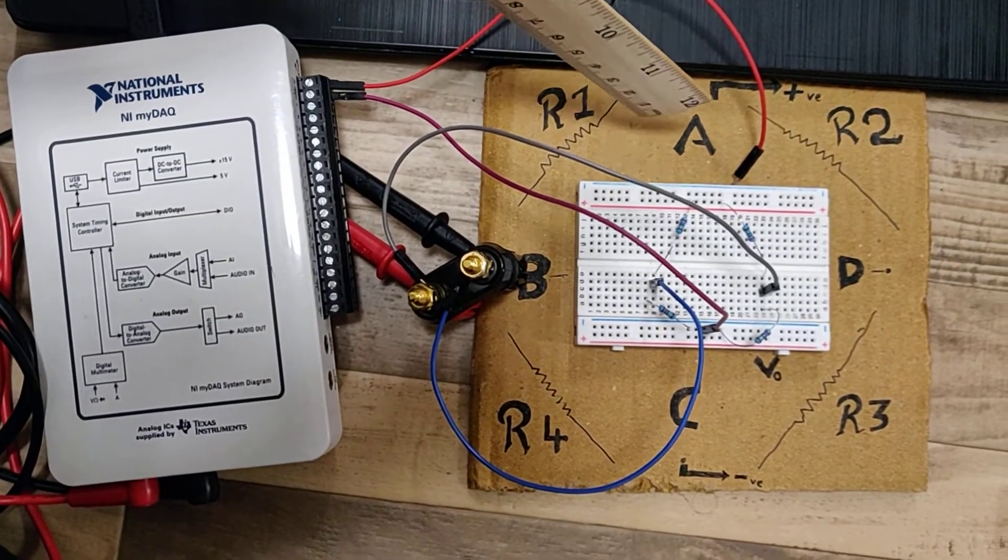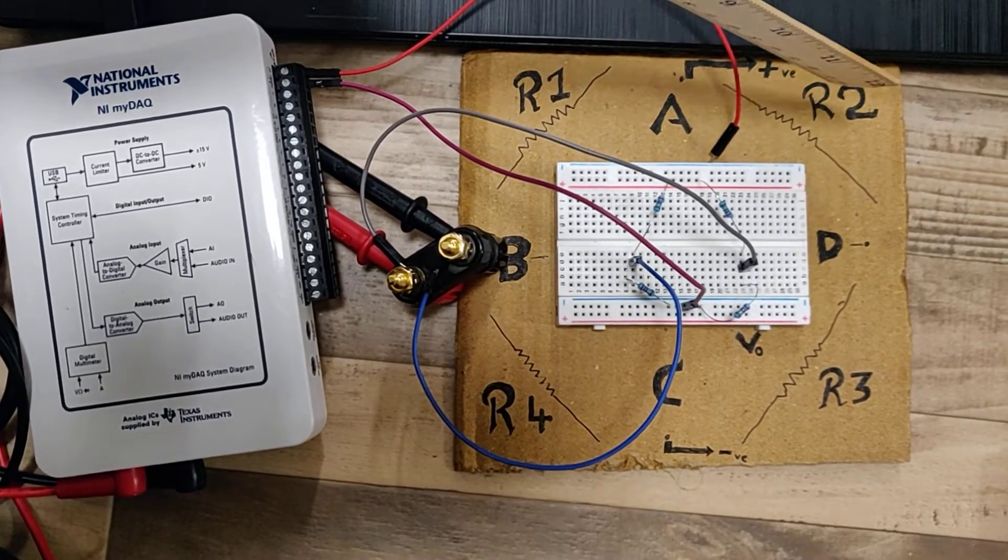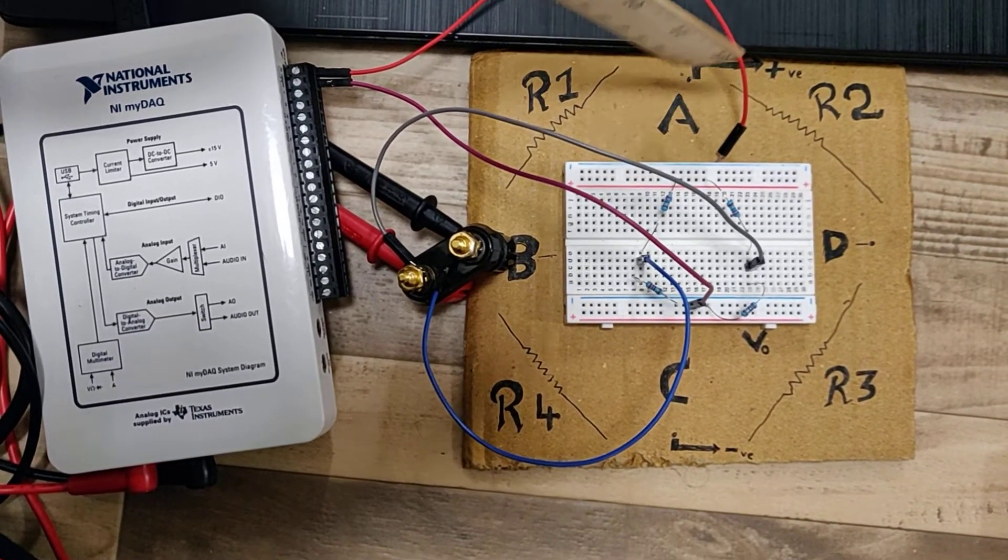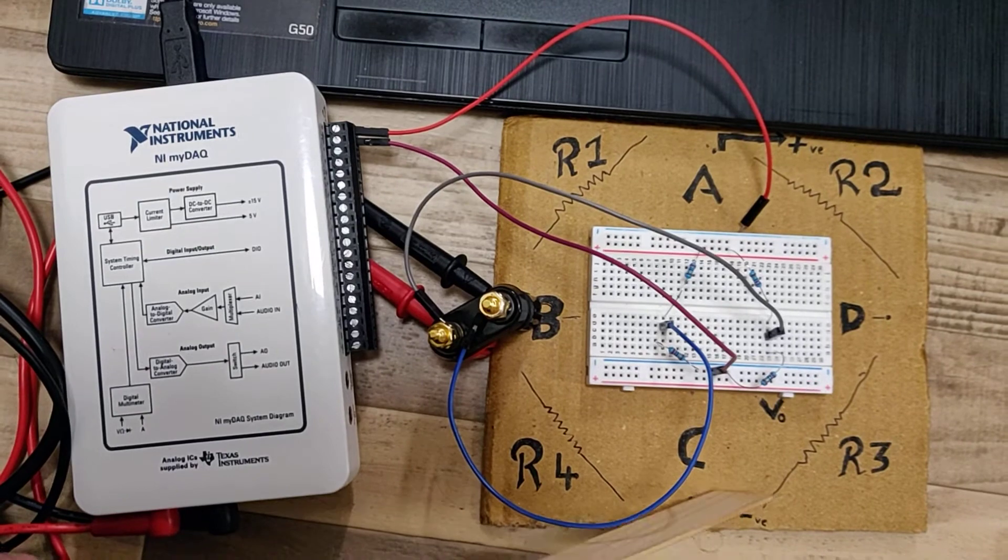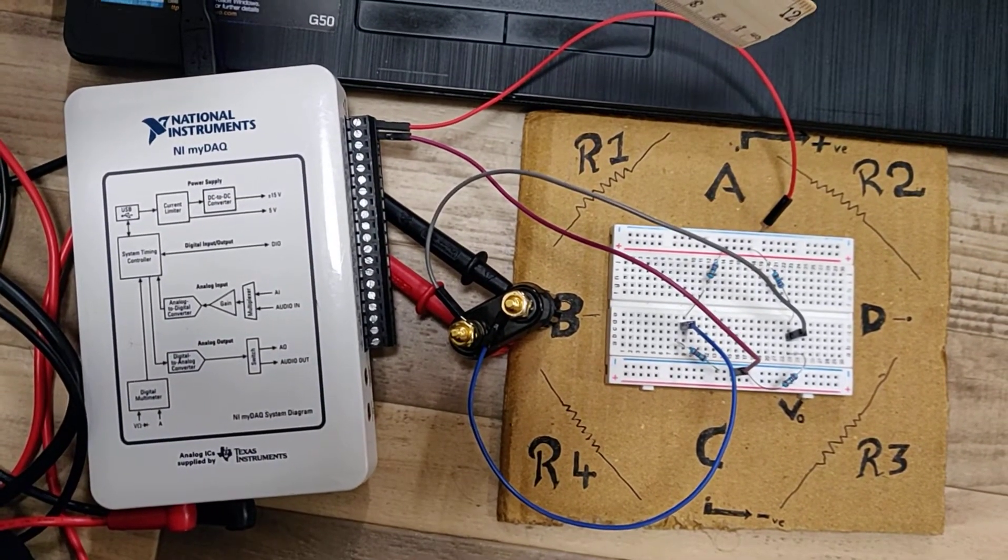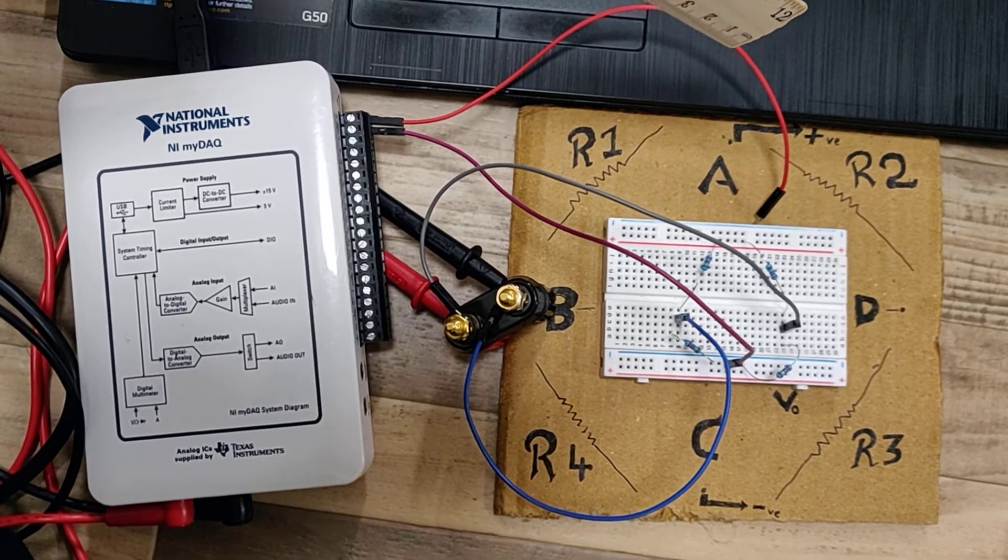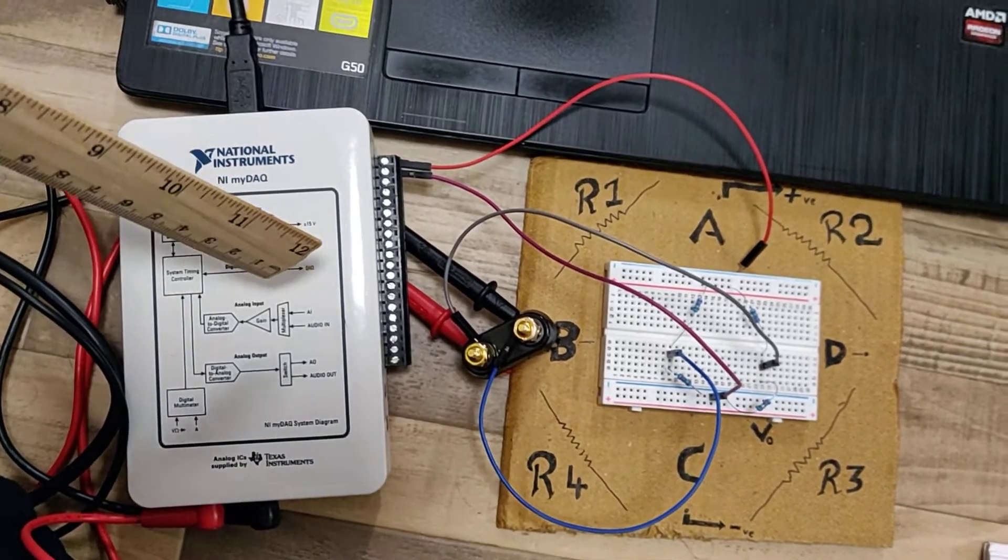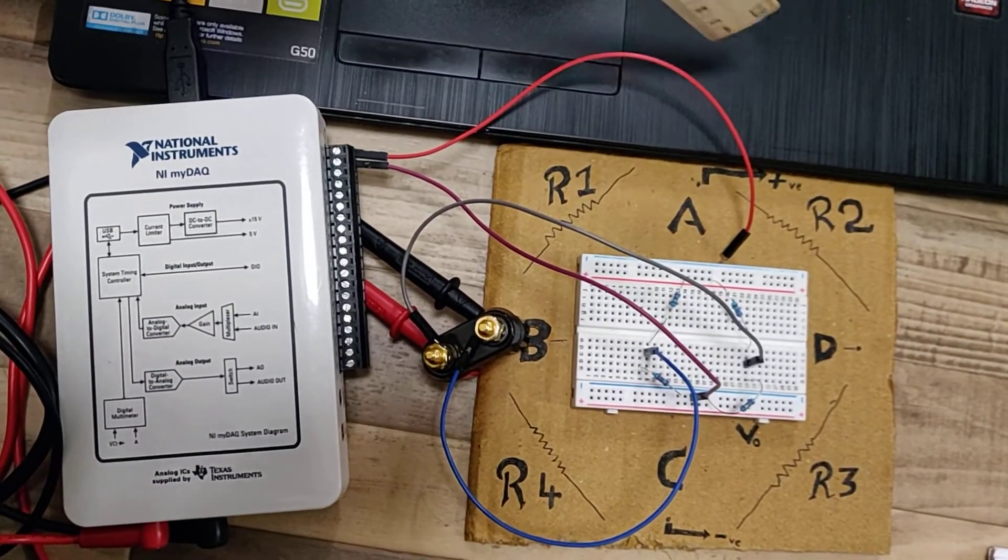From point A our input positive supply is being given. From point C our input negative supply is given. This positive and negative supply is of 5 volts and it is from our MIDAT device using jumper wire.